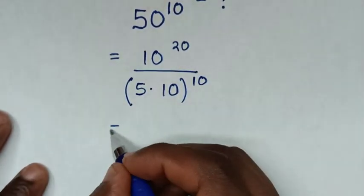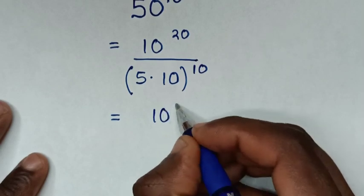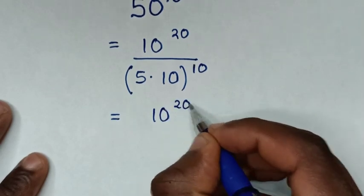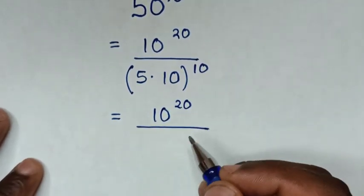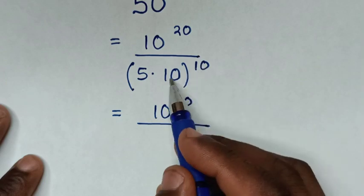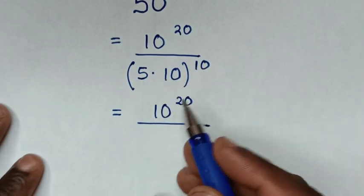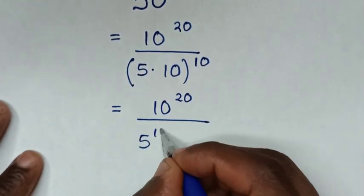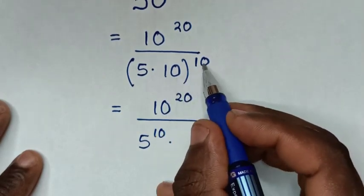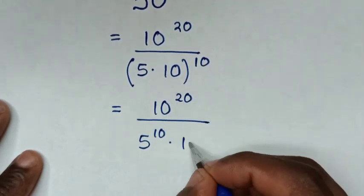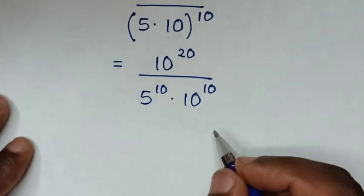It will be equal to 10 power of 20 in the numerator, then we take the power of 10 inside the bracket, so it will be 5 power of 10 times 10 power of 10.